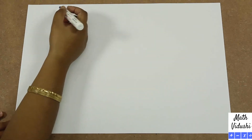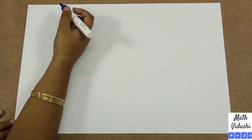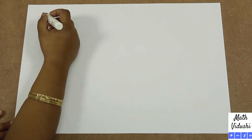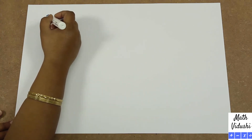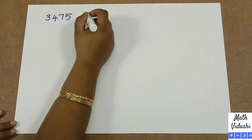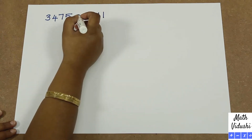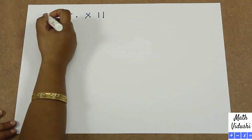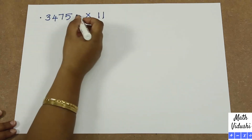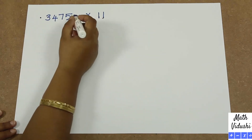Let's take a case where the numbers are a little bigger so that your addition of the two numbers will have a carryover. So how do you do that? Let's take an example: 3475 multiplied by 11. You have to put a dot here and a dot here because there are two 1s, so you put one dot on each side of the number.